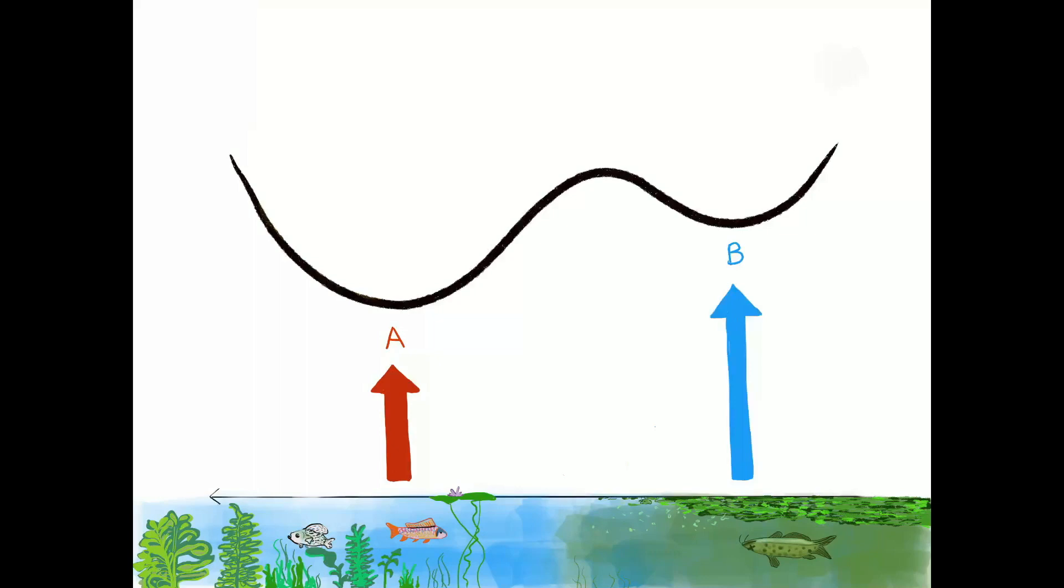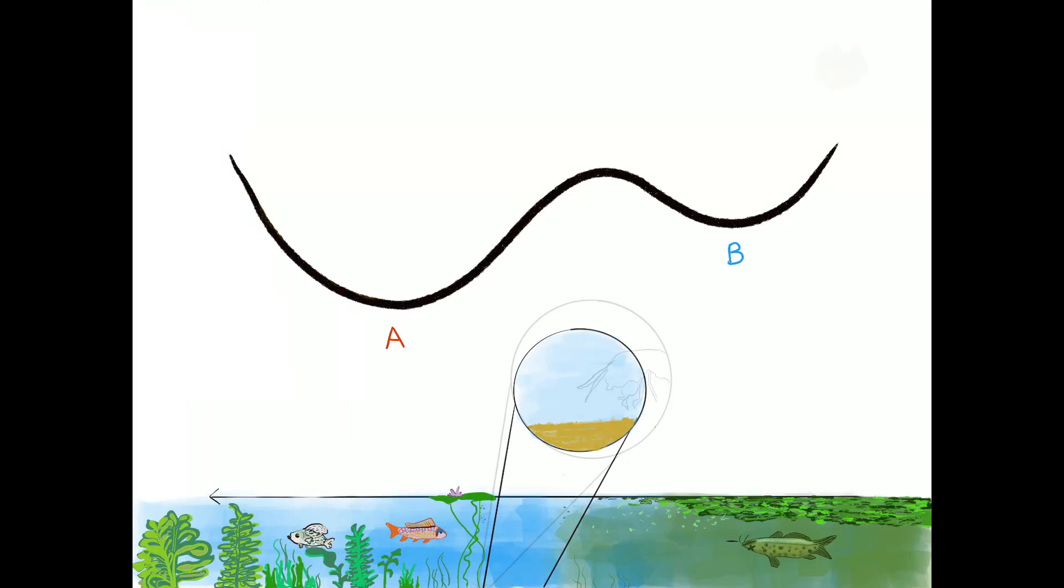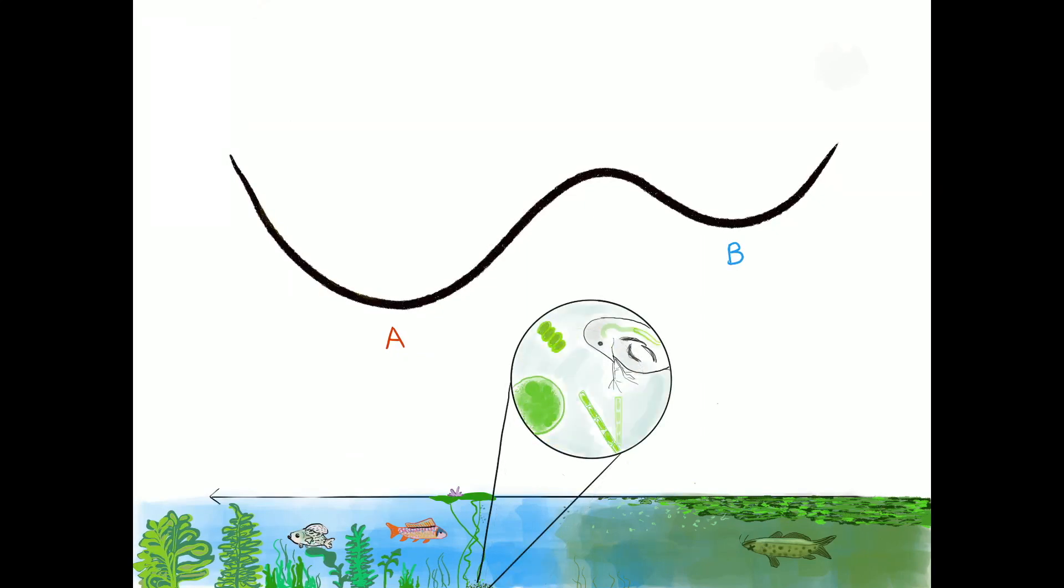These two alternative stable states are represented by valleys because they are internally stabilized by negative feedback mechanisms. Submerged water plants, for instance, reduce sediment resuspension and provide a refuge for algae-eating zooplankton.